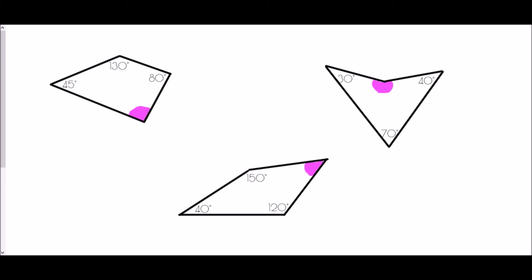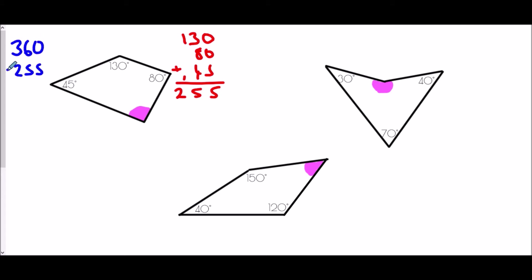Let's use that rule to find the missing angles in these quadrilaterals. First, we have three known angles: 45 degrees, 130 degrees, and 80 degrees. Adding them together: 130 plus 80 plus 45 — I get 255 degrees. To find the missing angle I subtract from 360: 360 take away 255 gives 105 degrees. So the missing angle is 105 degrees.